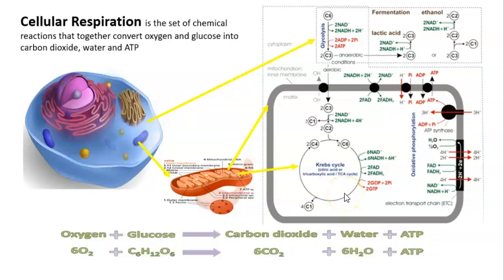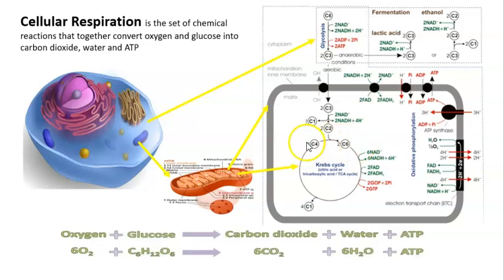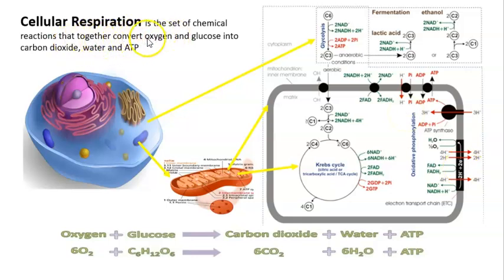The next step is going to be the oxidative phosphorylation that happens in the mitochondrial inner membrane. These two processes, the Krebs cycle as well as the oxidative phosphorylation, are going to be aerobic processes.